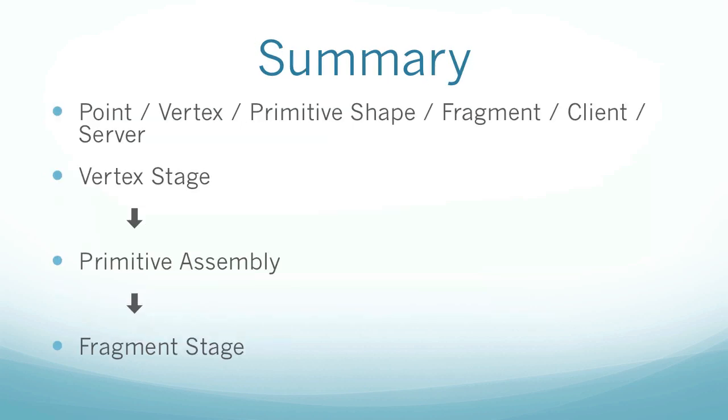Okay. So to summarize, you should be familiar with the following terminology: Point, vertex, primitive shape, fragment, client, and server. And you should now be aware of the fact that OpenGL has three main stages for rendering. There is first the vertex stage, then the primitive assembly, and lastly, the fragment stage.